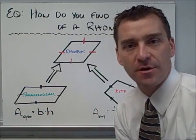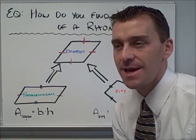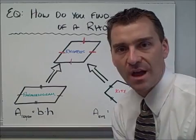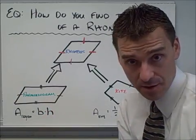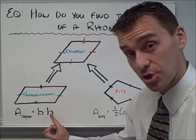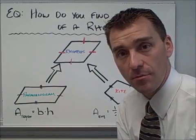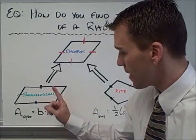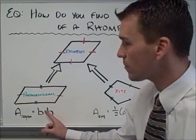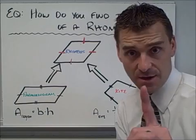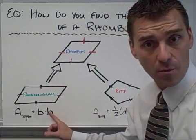Why is that important in terms of area? A rhombus is a parallelogram, and we know how to find the area of a parallelogram — it's base times height. So if a rhombus is nothing more than a specific parallelogram, then the area formula base times height is exactly the same thing that works for the area of a rhombus. So if you're given base and height of a rhombus, just plug them into this formula.